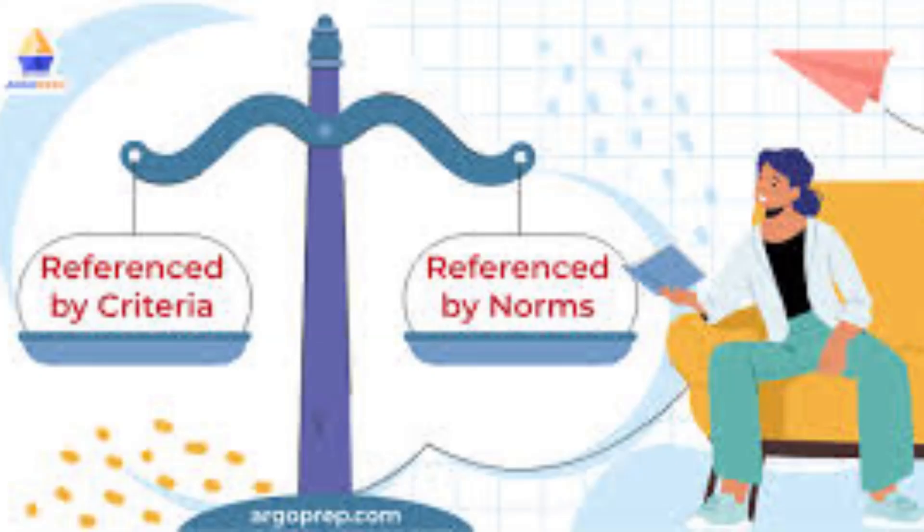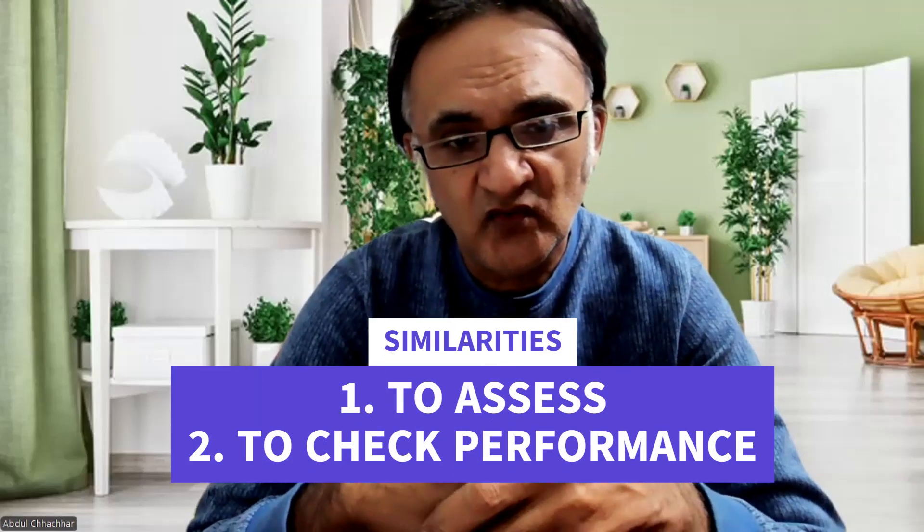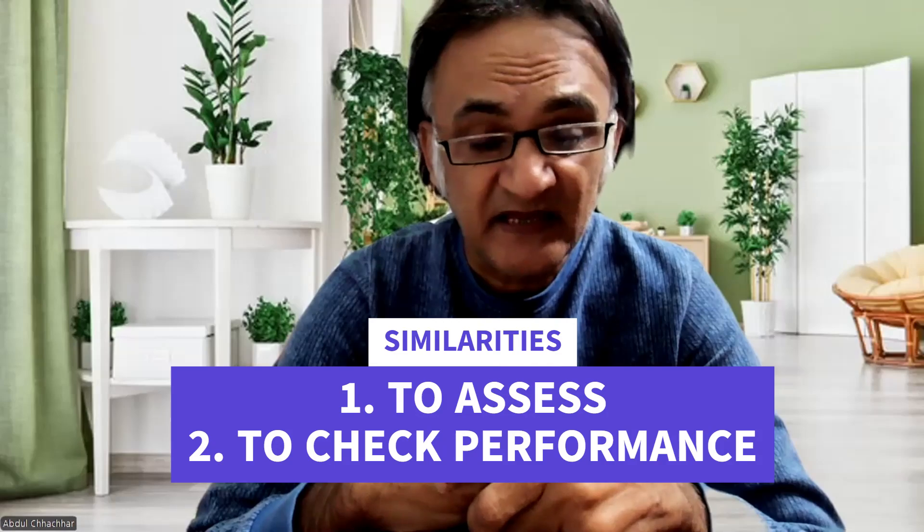Criterion and norm reference — we also say CRT for criterion referenced test and NRT for norm referenced test. Let's discuss first the similarities. Both are assessments, both are checking the performance of students. Now let's look at the differences.